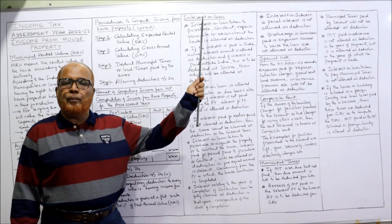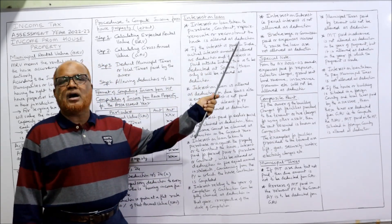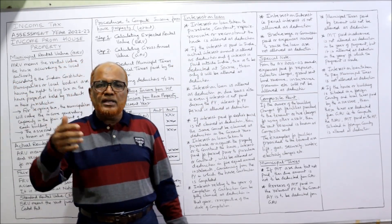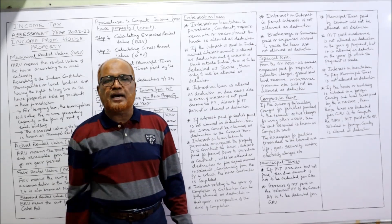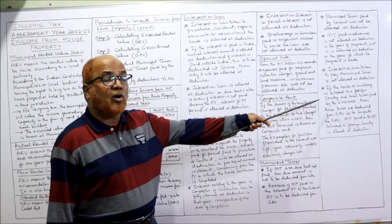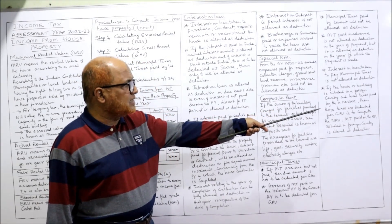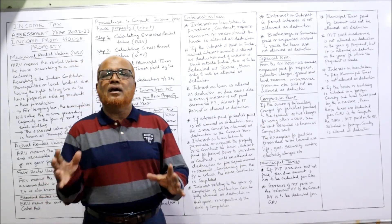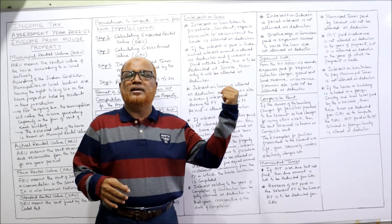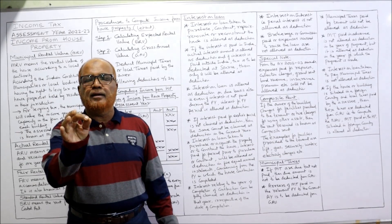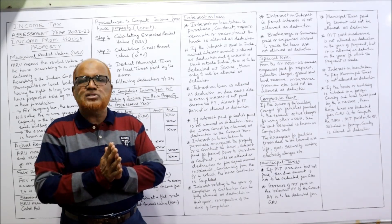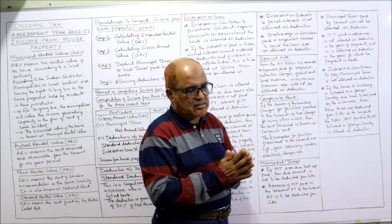Interest on a loan taken to pay municipal taxes is not allowed as a deduction. Interest is only allowed if the loan was taken to purchase, construct, repair, renovate, or reconstruct the house. If the house or building is situated in a foreign country and local taxes are paid by the assessee, those taxes are still deductible from GAV — whether the house is in India or abroad.